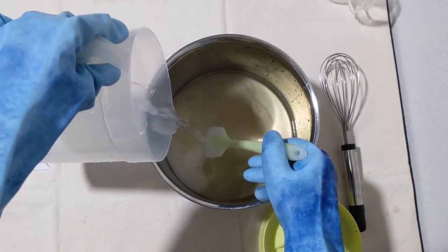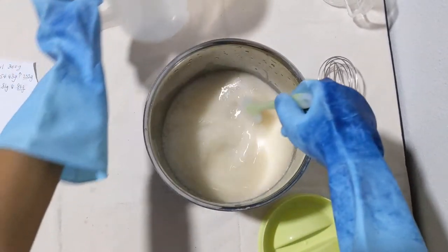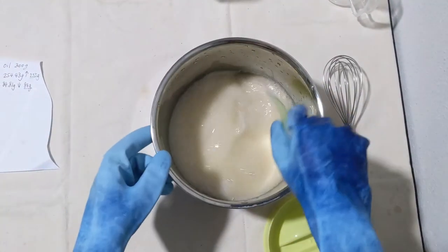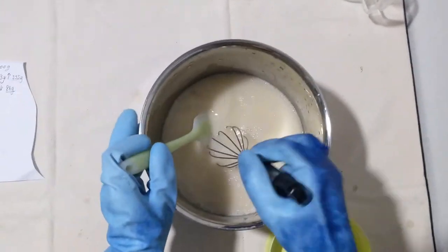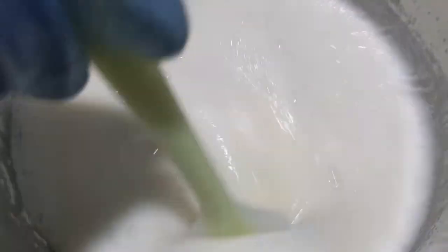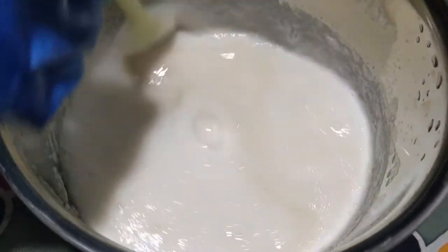Now, we'll be putting the lye solution into our oils. Pour it down the shaft of a spatula to prevent it from splashing. And start stirring. Within a few minutes of stirring, you'll see that the color will start to get creamier. This is a good sign. Afterwards, the texture will also start to get thicker.